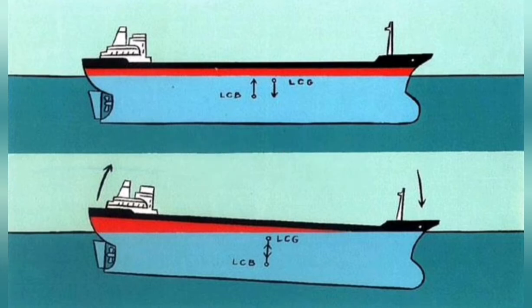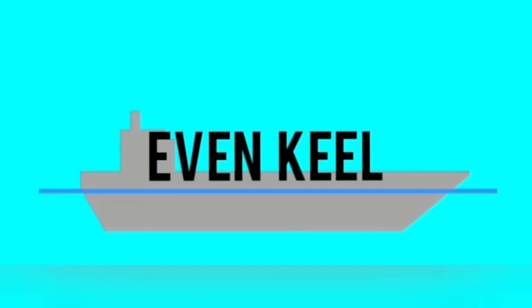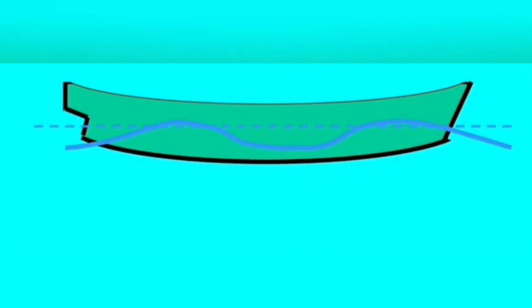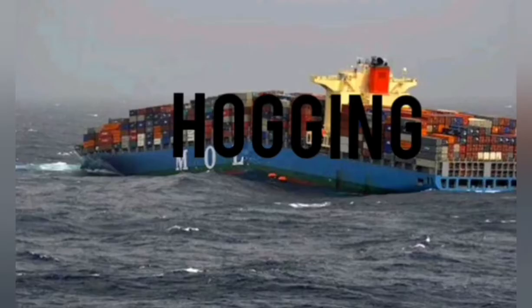Ship Trim: It is the difference between the draft at the stem and the draft at the stern. Even Keel: When a ship is floating on even keel, the trim equals zero — in other words, there is no difference between the draft of the stern and the draft of the stem.